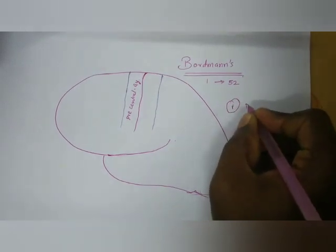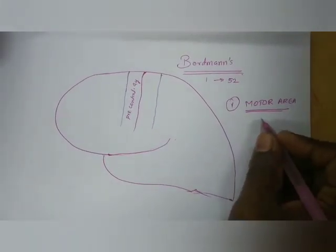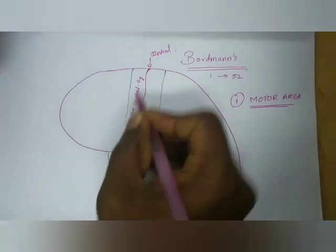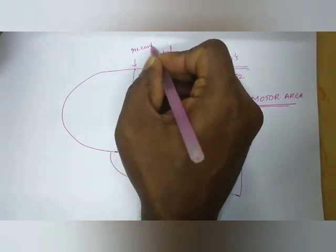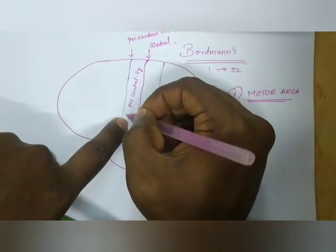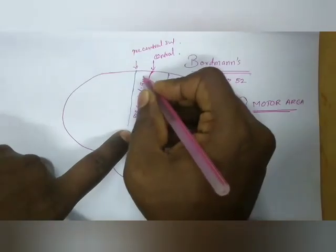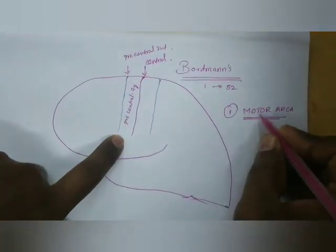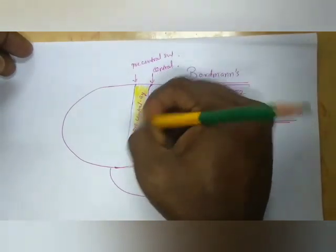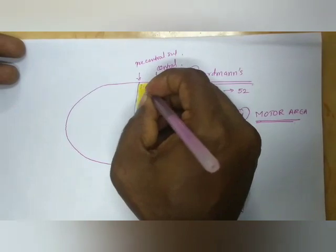First in our list of functional areas, we will study the motor area. The motor area is located between the central sulcus and the pre-central sulcus — that is, in the pre-central gyrus. This pre-central gyrus has the primary motor area, which is area number four.